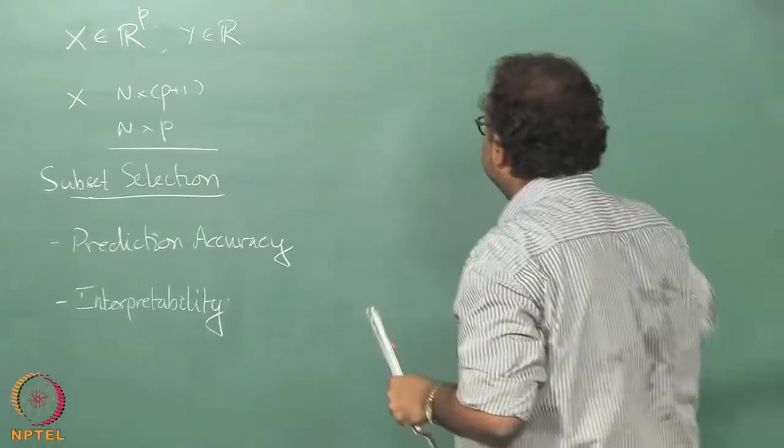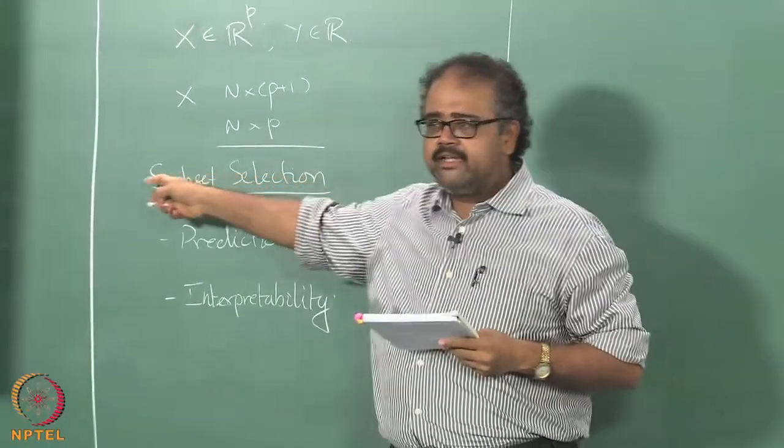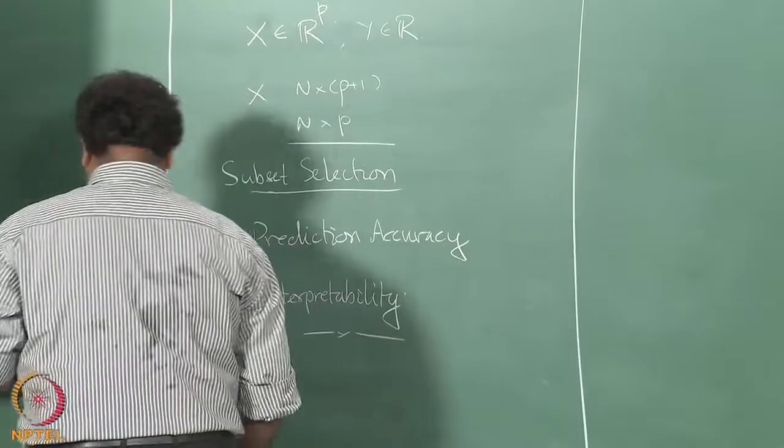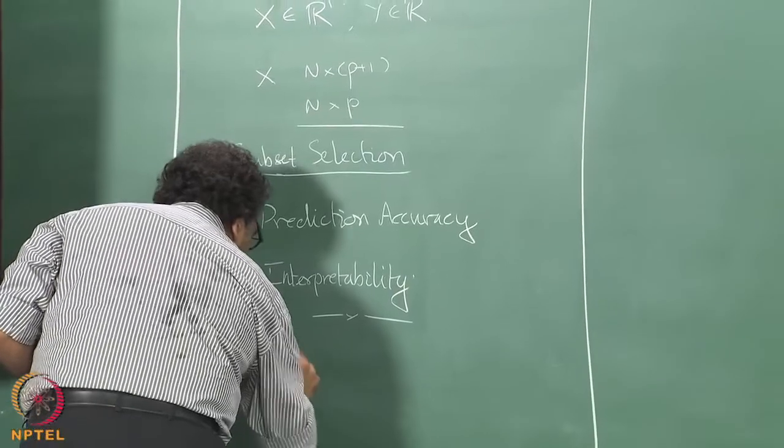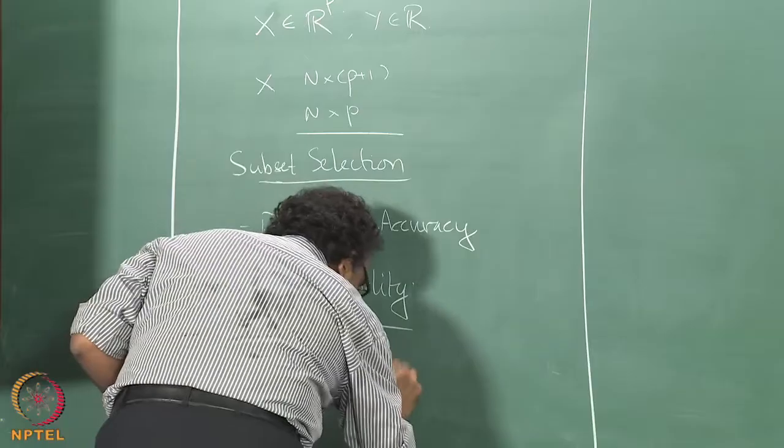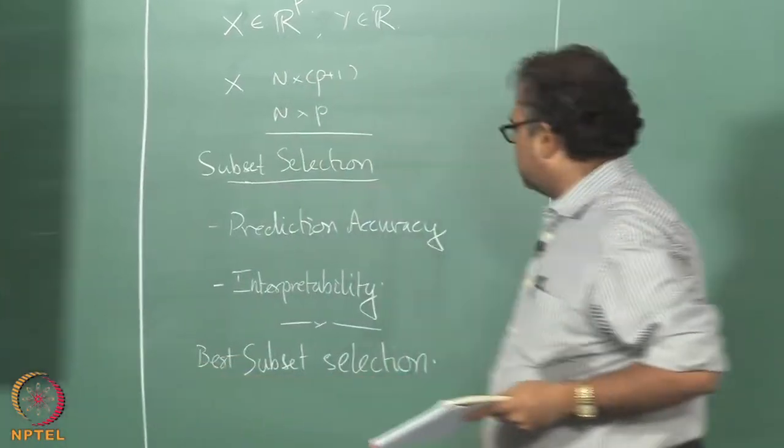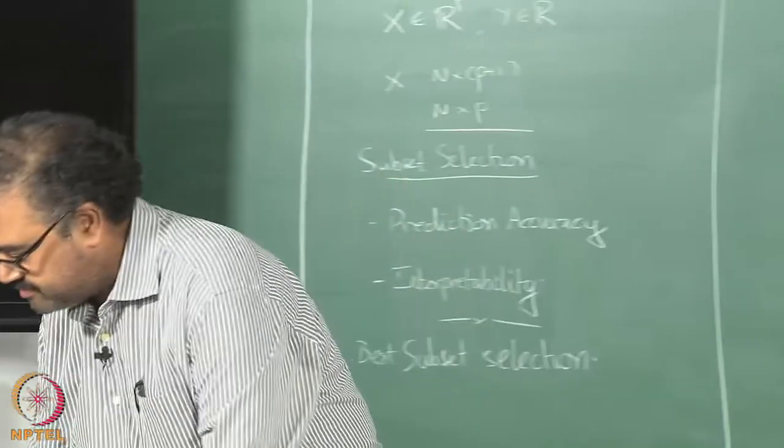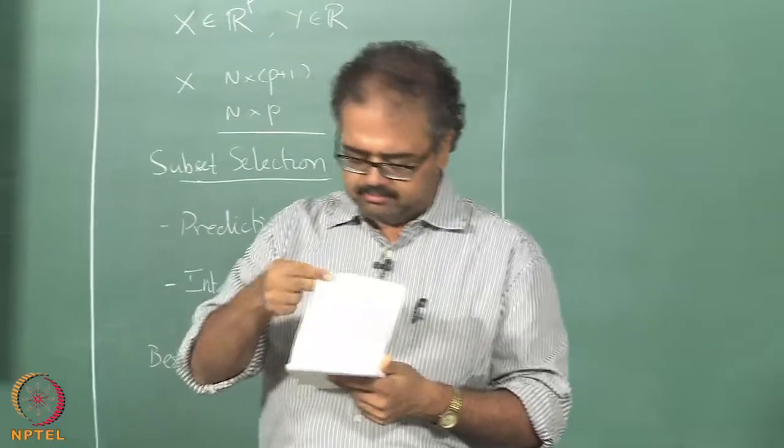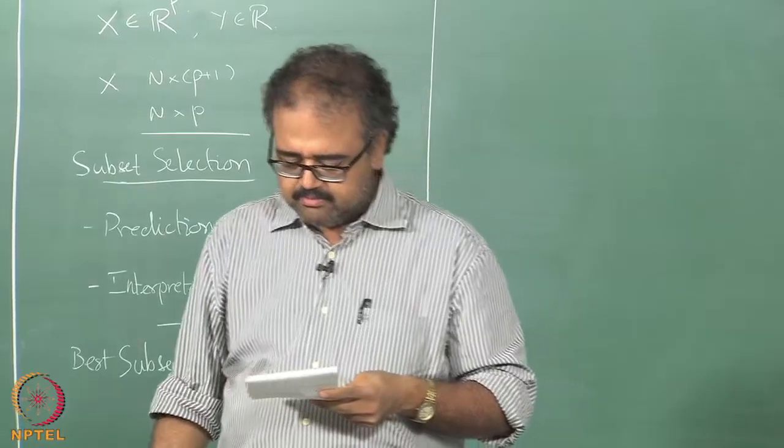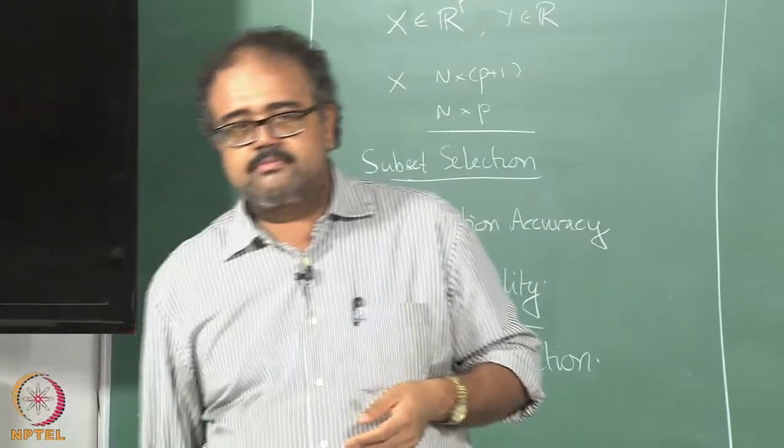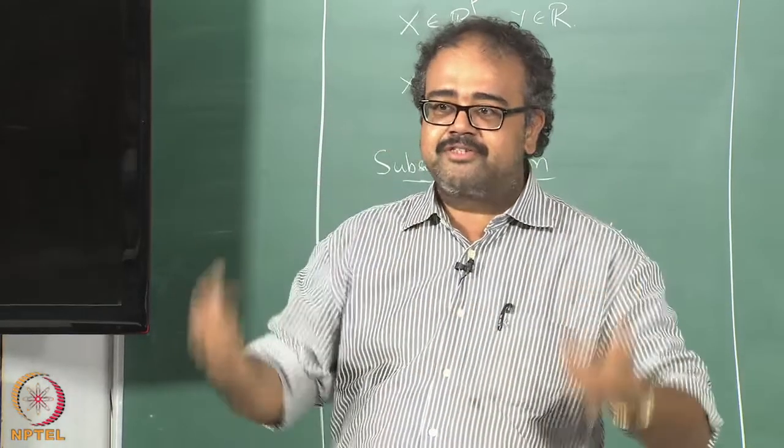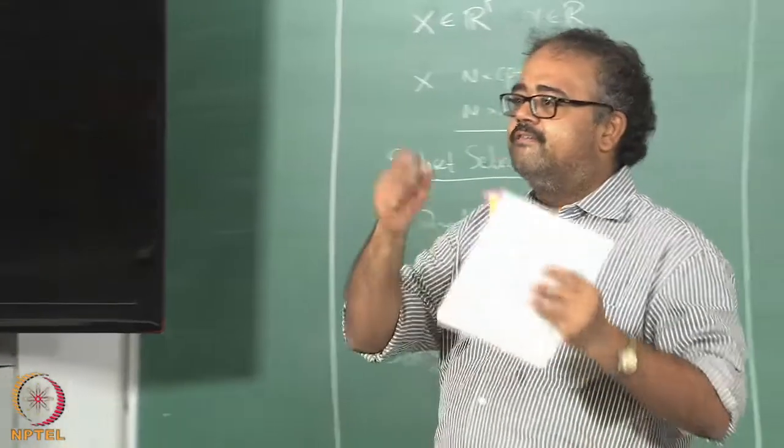There are many ways of doing this. The simplest kind of approach is essentially to take this literally and try to select from subsets of features. Why is that a simplistic approach? Why is that a simplistic approach? It is combinatorial, exactly.